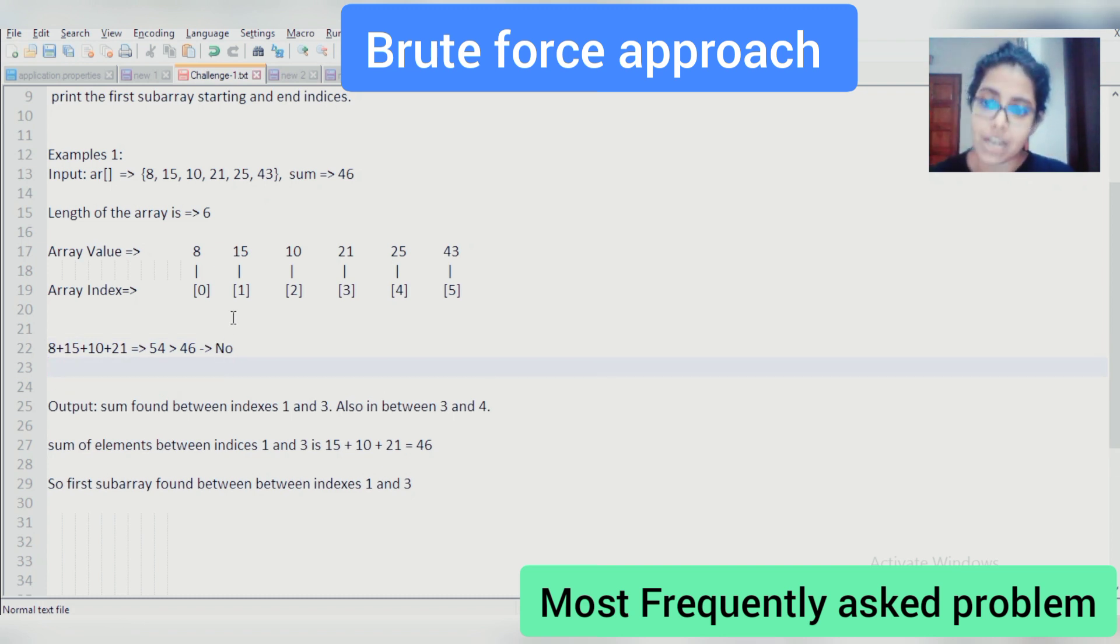Now, let us start from the 1st index element. So 15 plus 10 is 25, plus 21, we get our expected value 46. Here we found out the sum between indexes 1 and 3. So according to what we get, the output should be that we got the sum found between indexes 1 and 3. Begin index is 1, end index is 3.